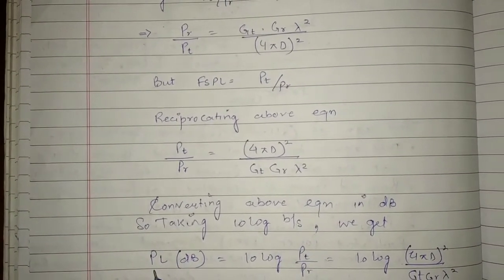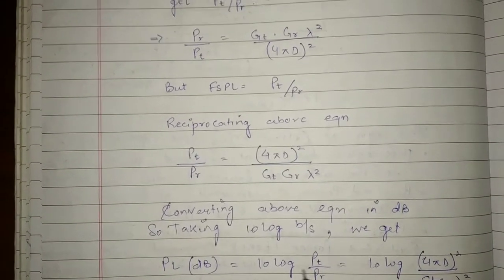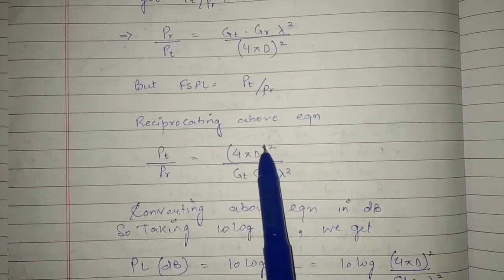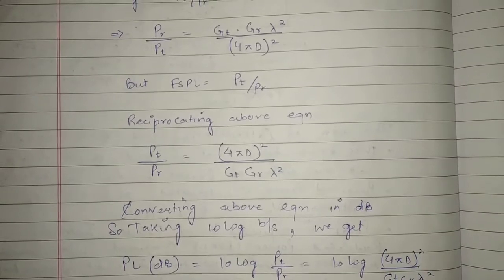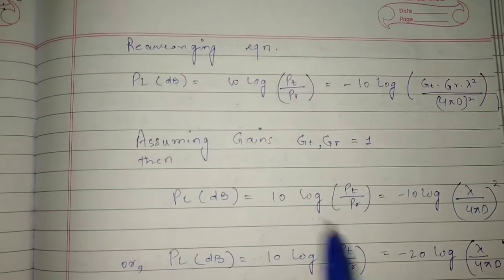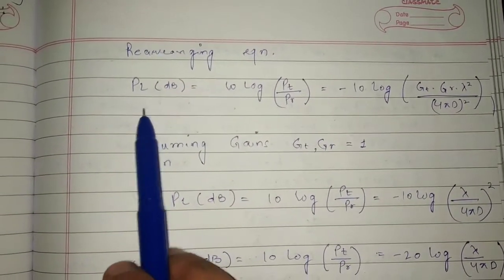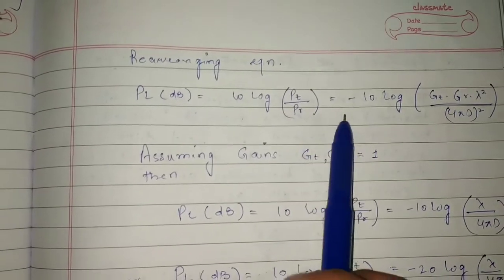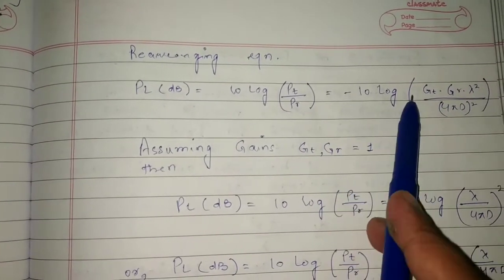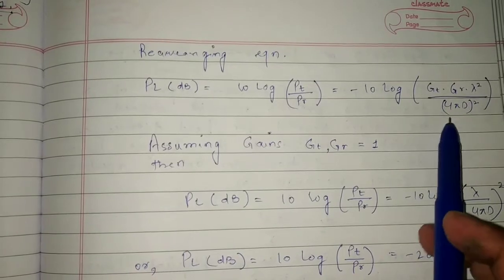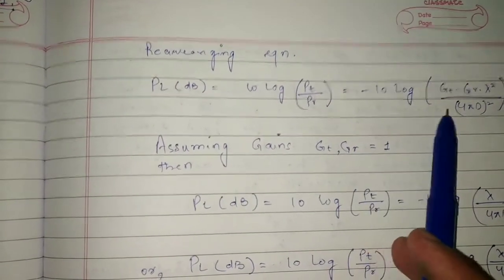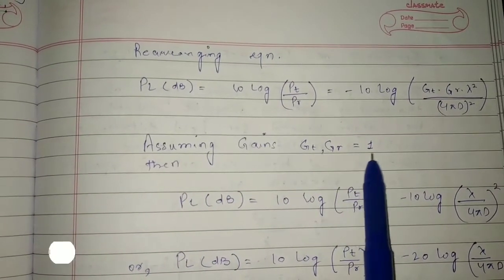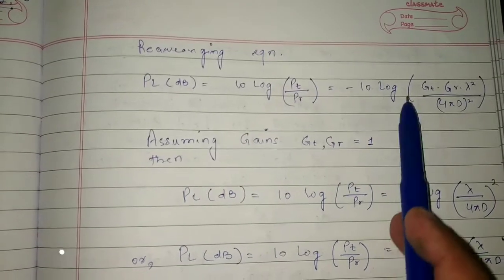Path loss in decibels equals 10 log(PT/PR) = 10 log[(4πD)² / (GT·GR·λ²)]. We rearrange this equation and write it with a minus sign to reciprocate the last term so that it resembles the Friis free space equation. We then assume gains GT = GR = 1.